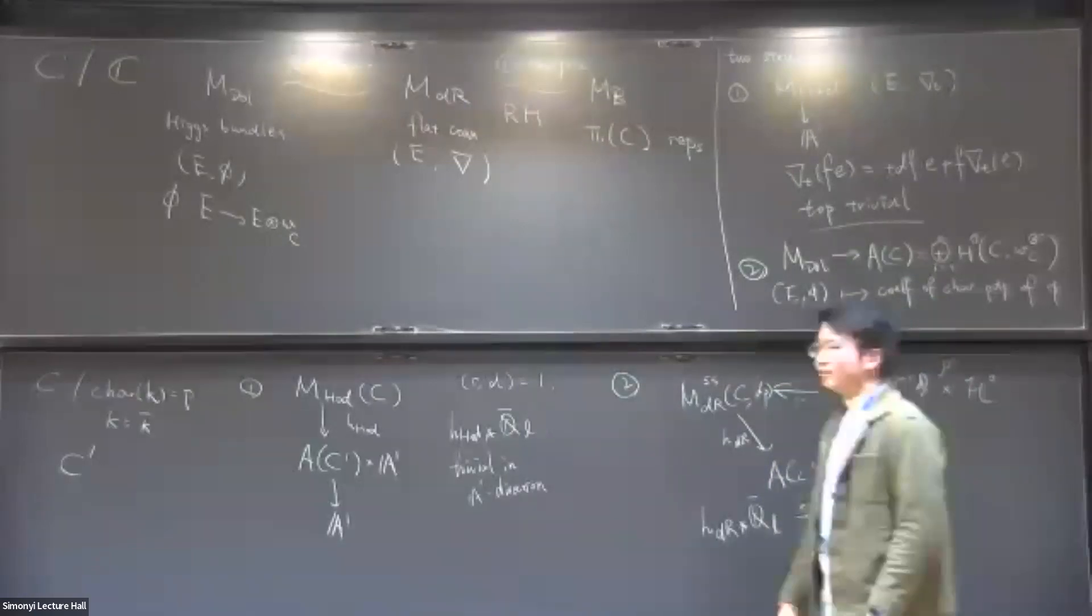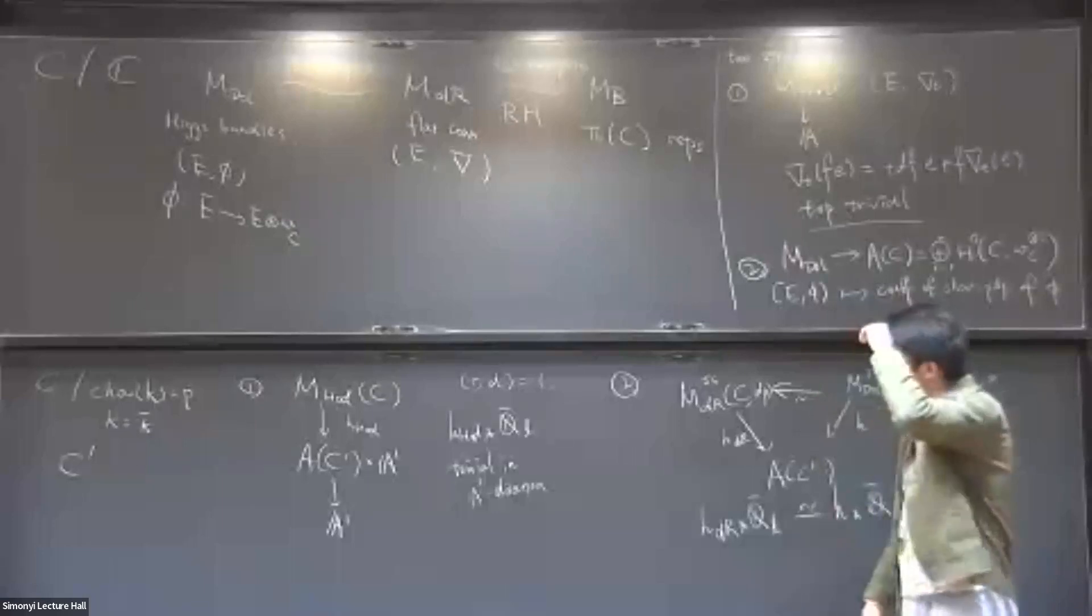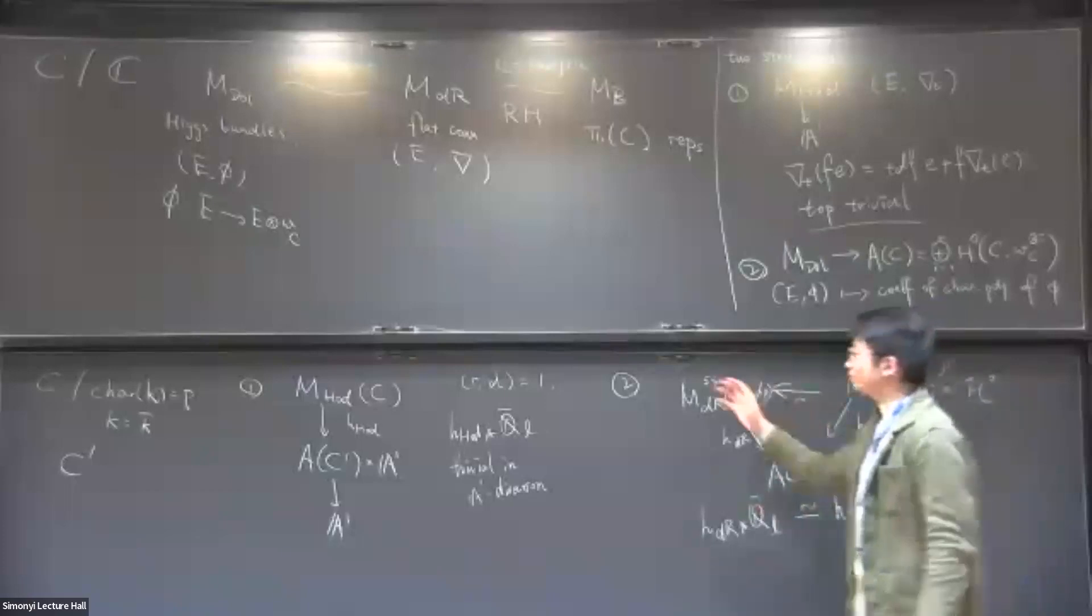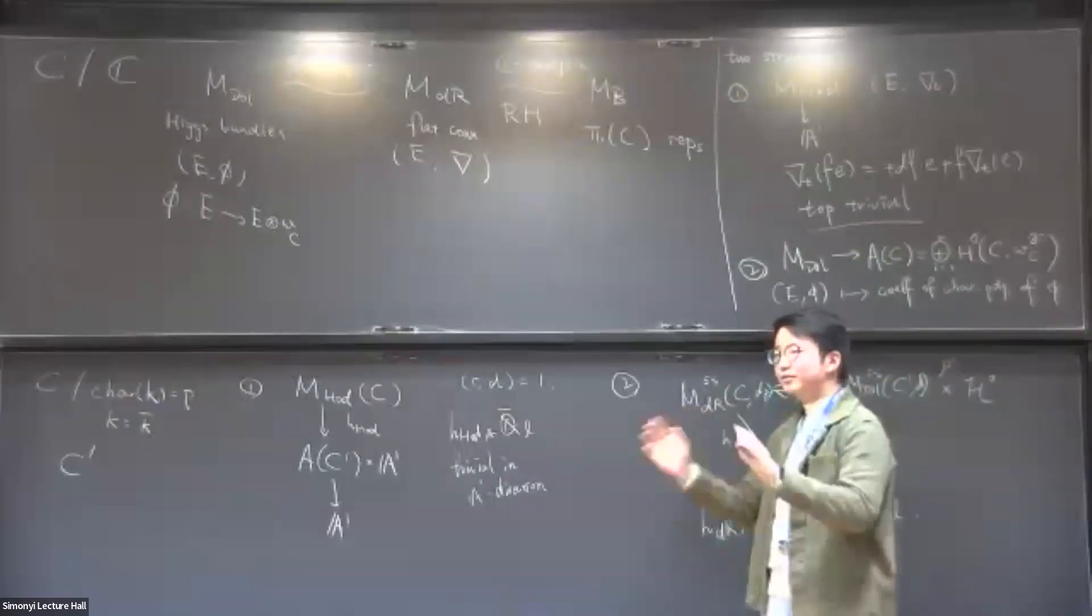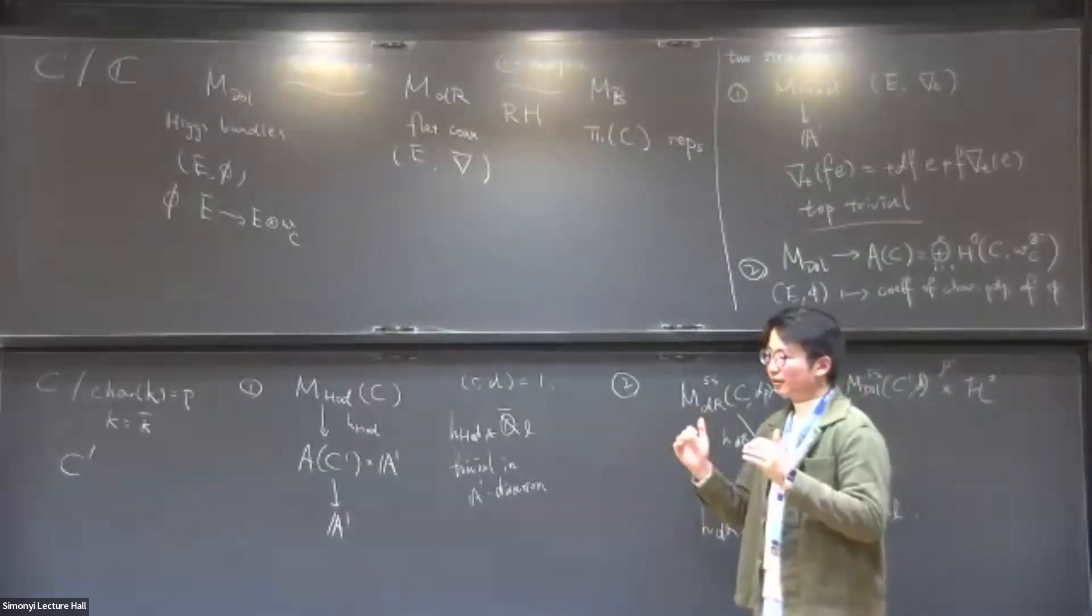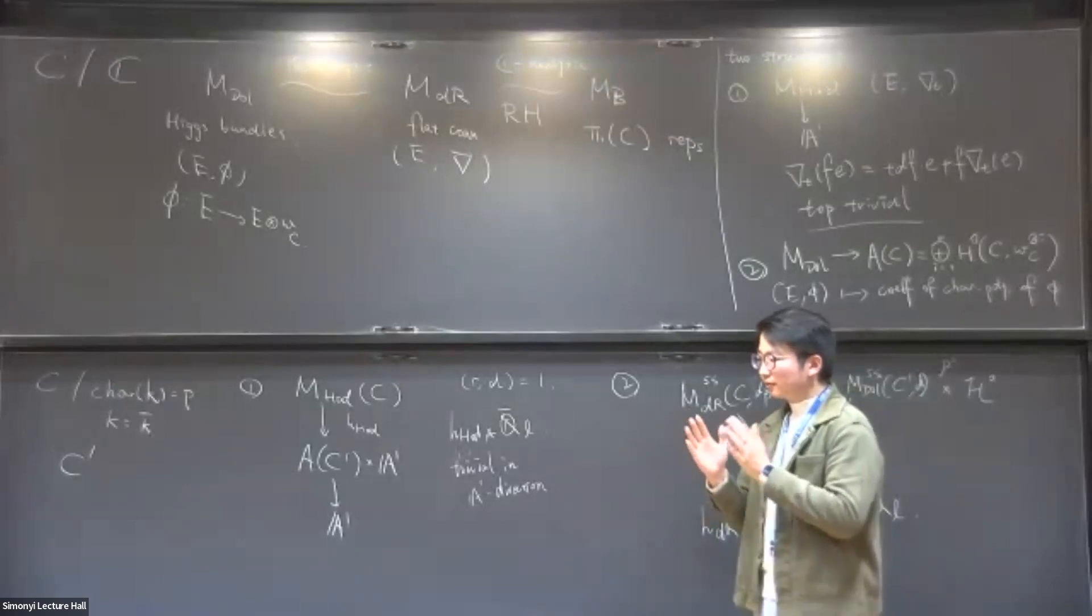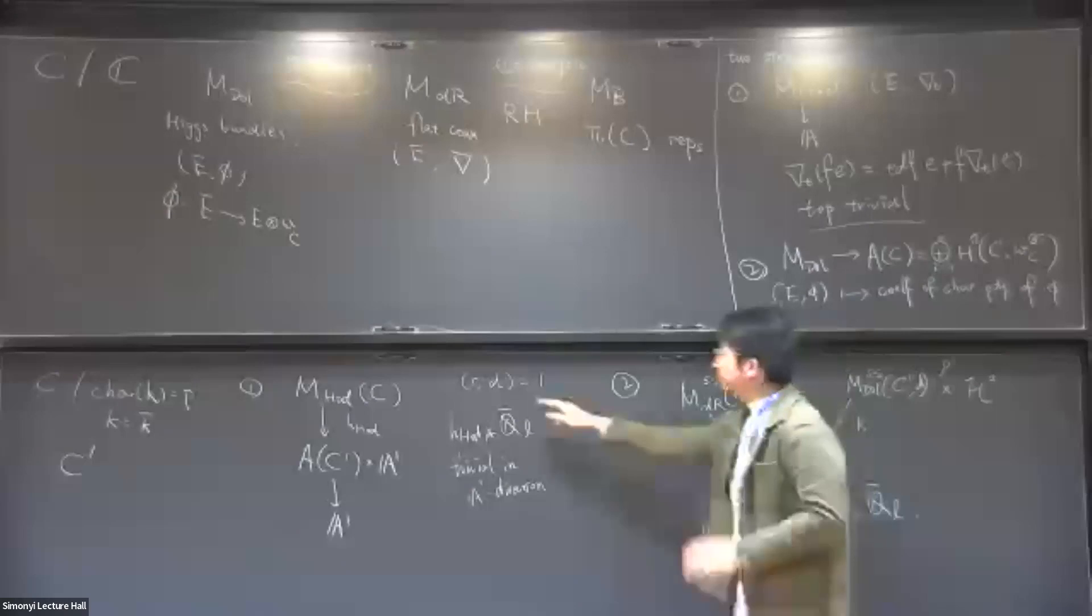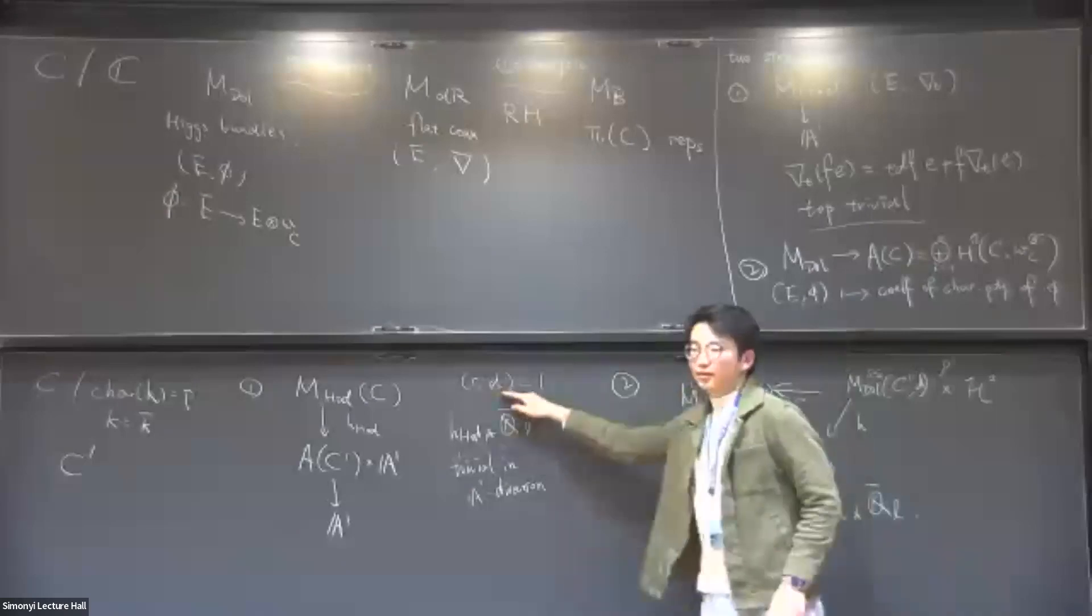And also, proven on the level of cohomology groups that if the degree independence results should be, the intersection cohomology groups are the same if the GCD are the same. Oh, yeah.